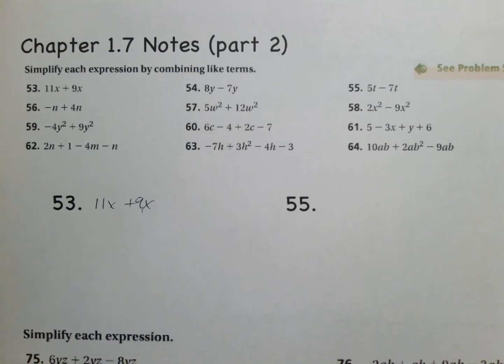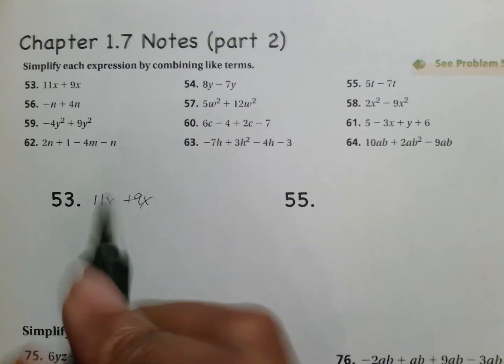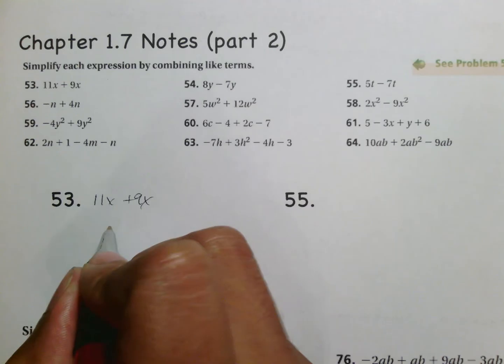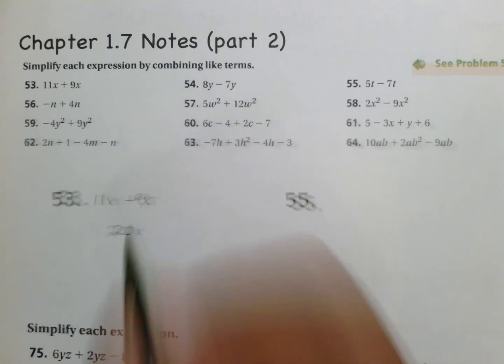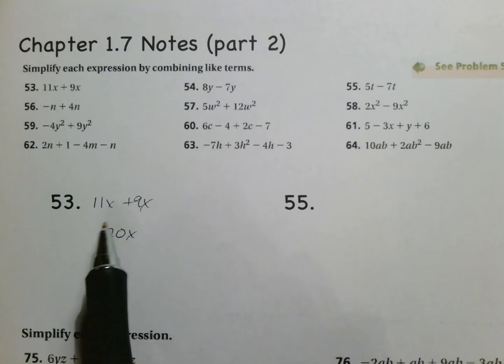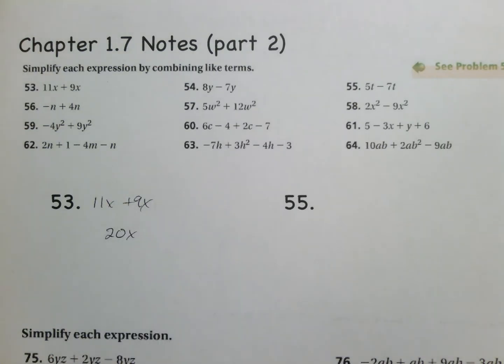So for the first problems you'll see they're very easy. You simply take 11x, 9x. This is 11x's plus 9x's which would make 20x's. Do not change the label on those. It's just a regular x because you're talking about 11x's and 9x's make 20x's.